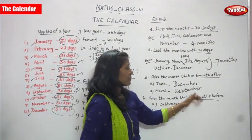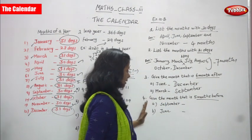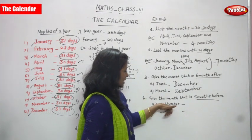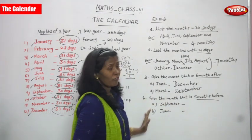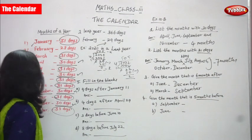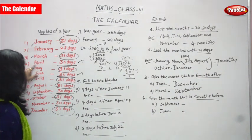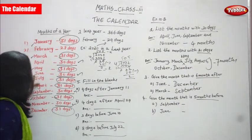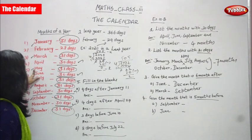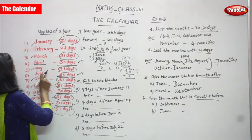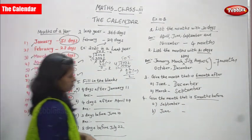Give the month 5 months before September. You should not consider September itself. Count backwards: August, July, June, May, April — that is 5 months. So April is the answer for 5 months before September.